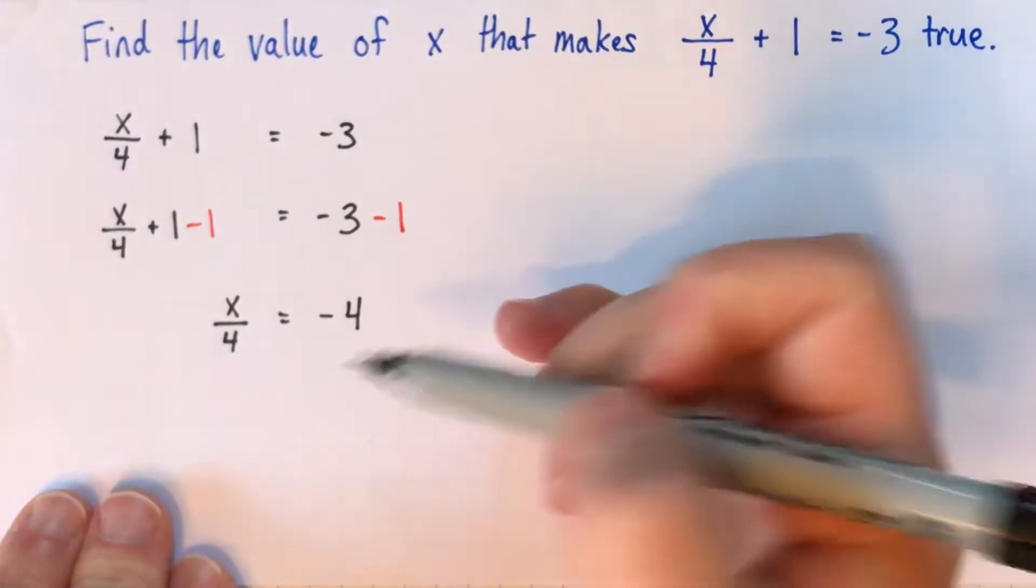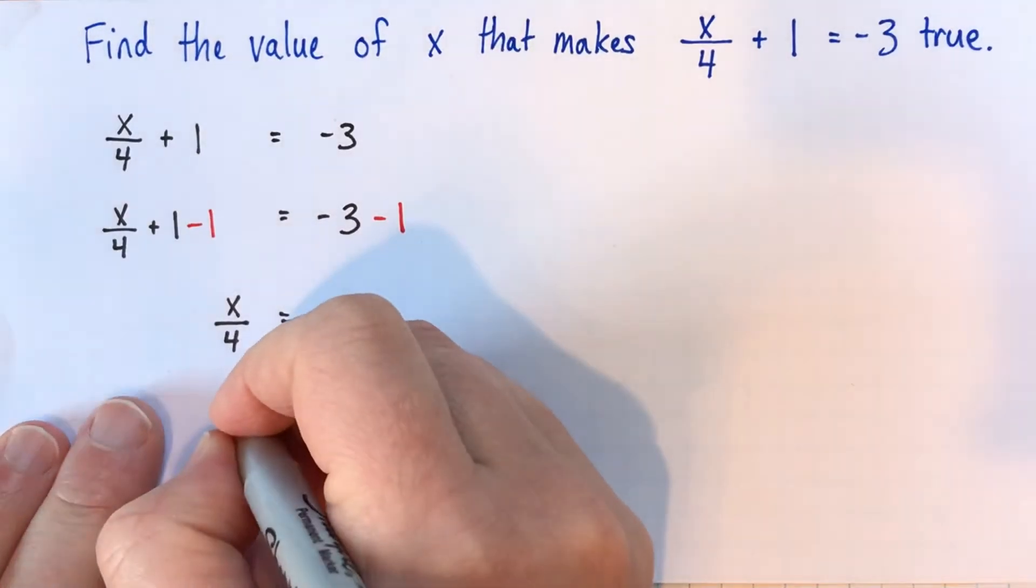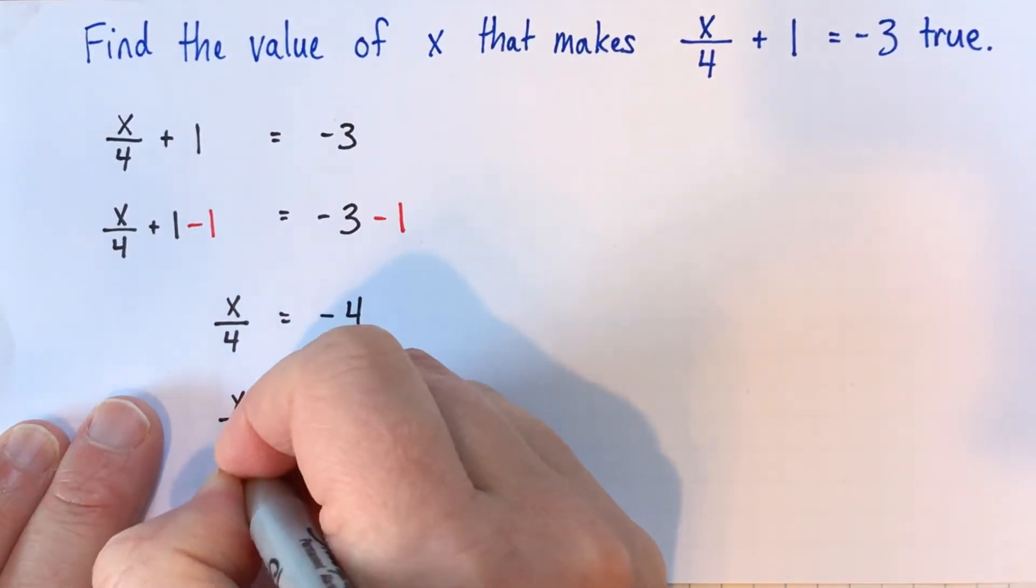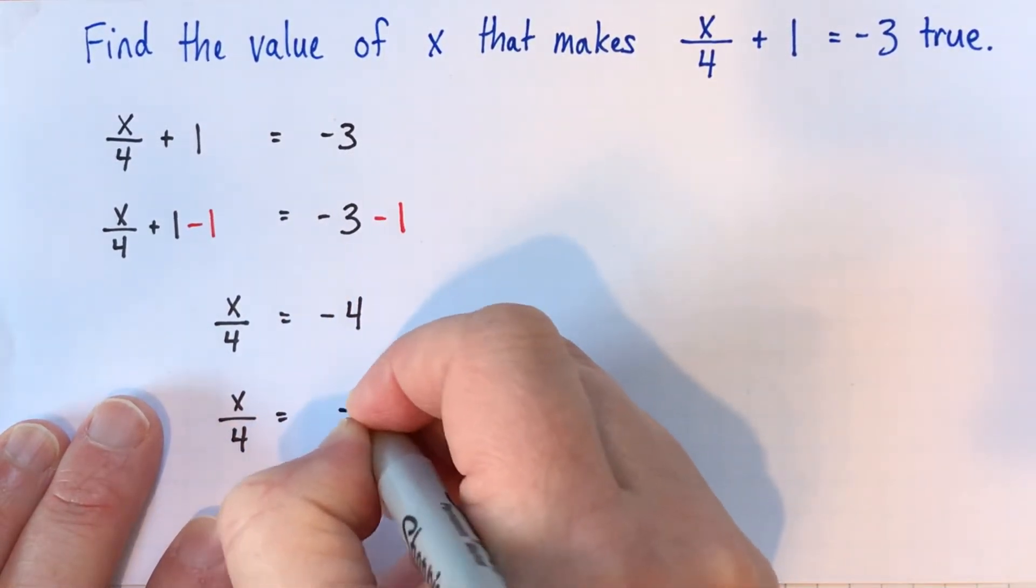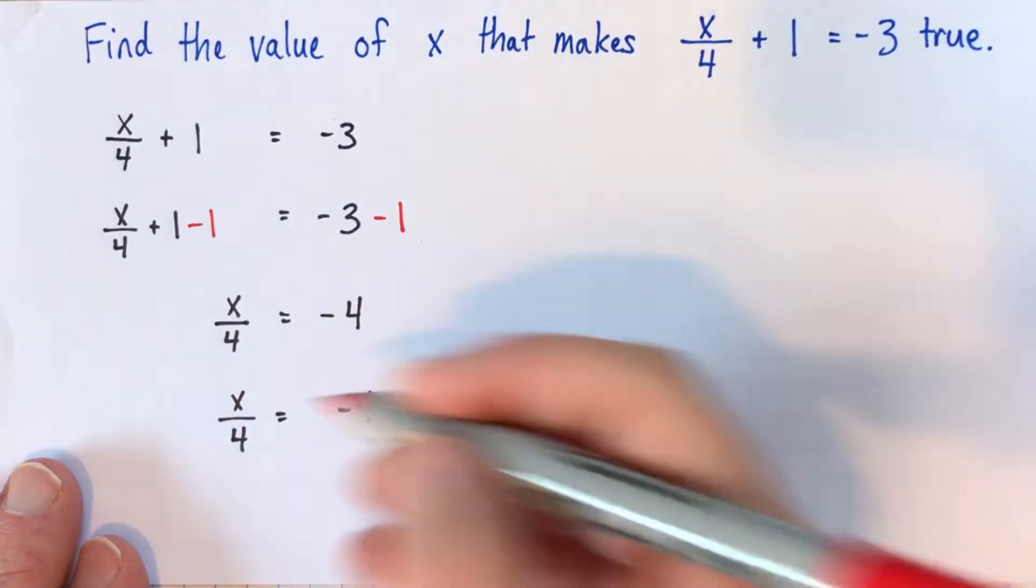Alright, so we've got x divided by 4, or a fourth of x equals negative 4. Now we think, what operation could we do to get rid of this divided by 4? Well, we can just do the opposite operation. So we can multiply by 4.